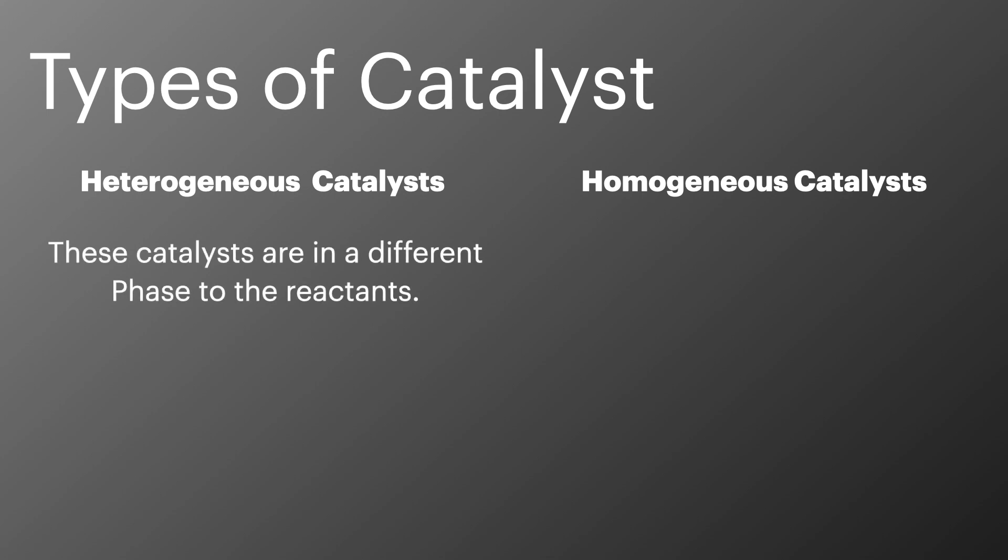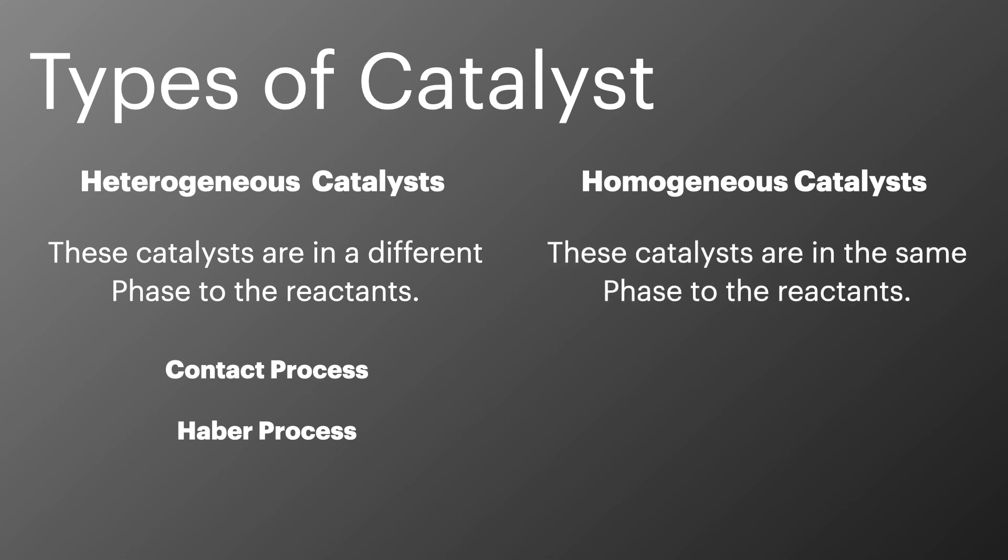Heterogeneous catalysts are in a different phase from the reactant, and examples include the contact process and the harbour process. Homogeneous catalysts are where the catalyst is in the same phase as the reactants. Examples of this include Fe2+ with S2O8 and Mn2+ with C2O4.